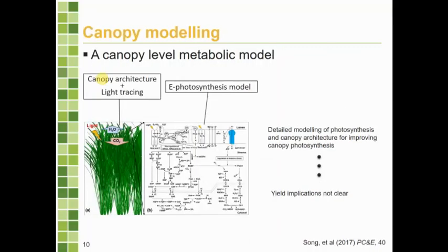A second example is canopy modeling, where people coupled a complex photosynthesis model with a canopy architectural model using light ray-tracing to model how every photon bounces around and gets absorbed within the canopy structure. They claim to calculate how much photosynthesis your canopy does over a day. But the limitation is that it's only a daily calculation, and scaling that to crop yield still leaves a big gap.